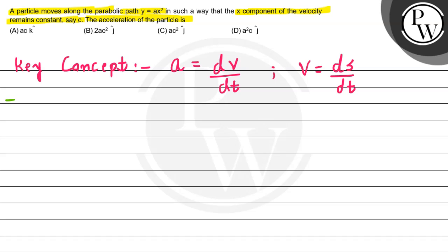Let's see what we are given here. A particle is along a parabolic path. The parabolic path is given as y equals ax square. Now, the x component of velocity remains constant, which we are given here.